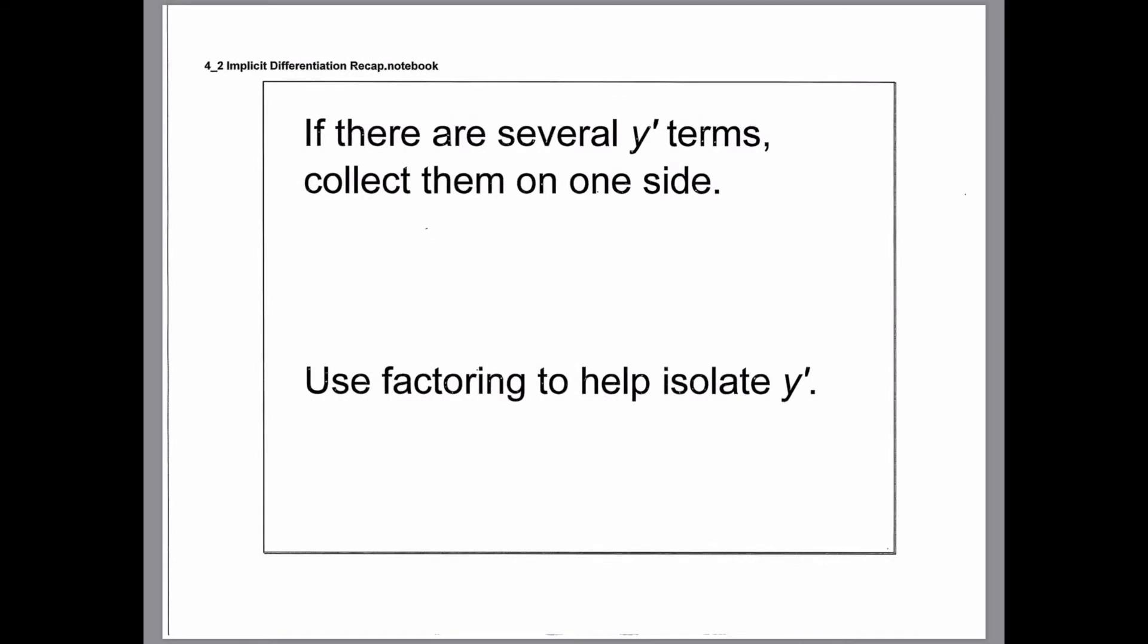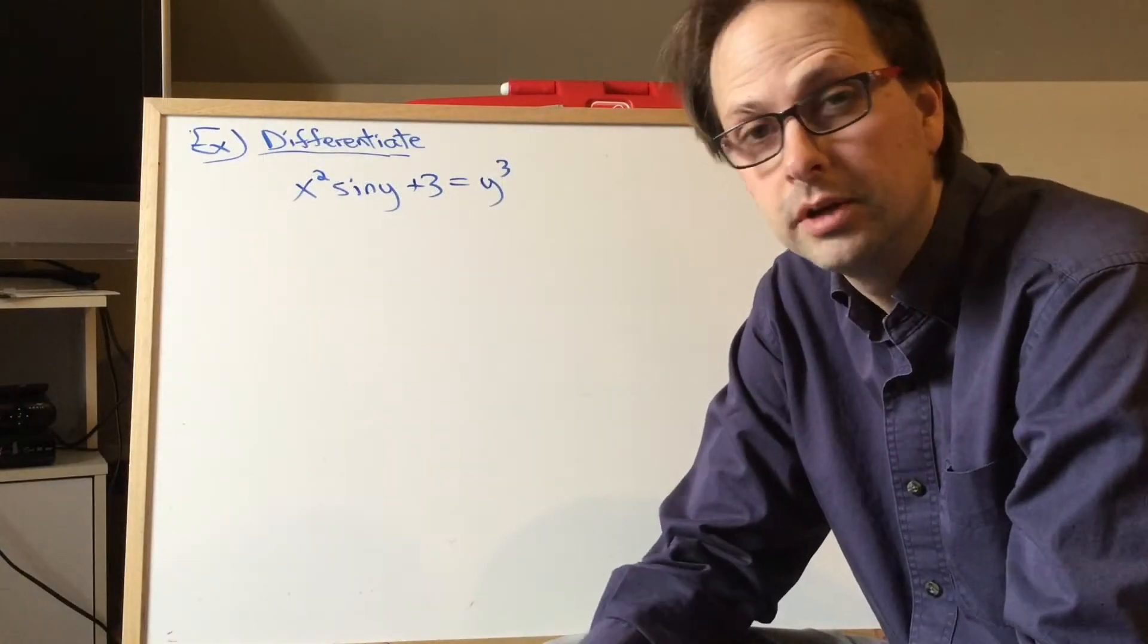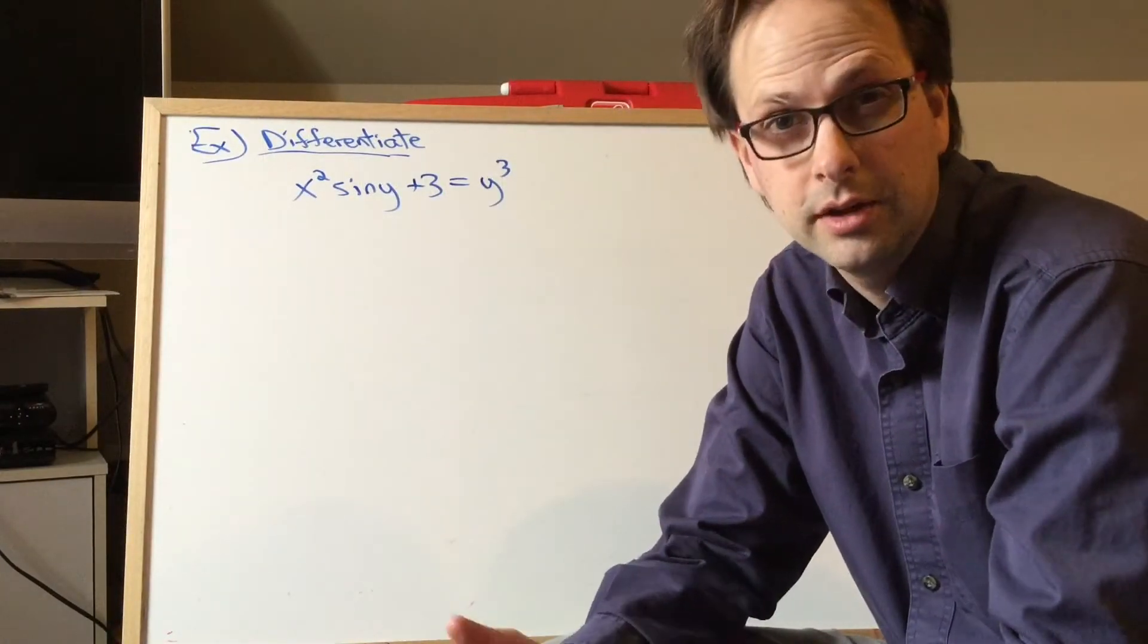If you end up with several y prime terms, collect them on one side, and then you can use factoring to help you isolate y prime. We'll do one example to show the process, but if you need more examples, just check out the video lessons.